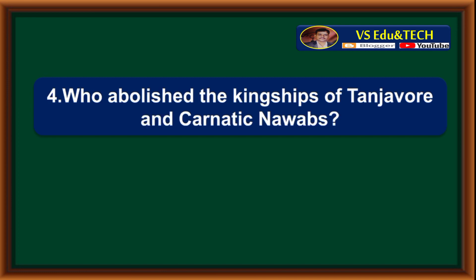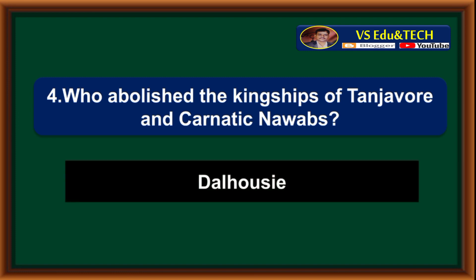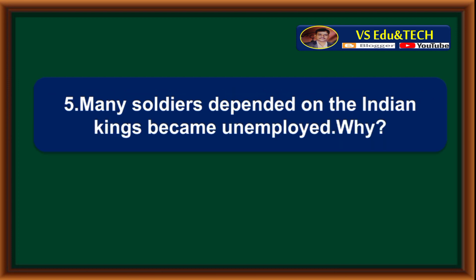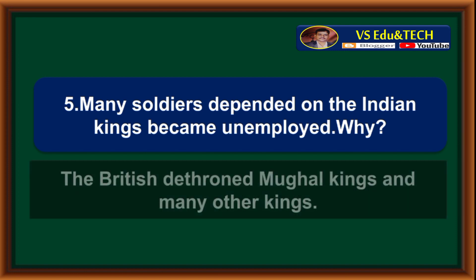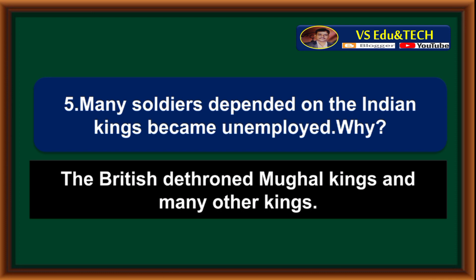Question 11: Who abolished the kingship of Tanjavur and Carnatic Nawab? Answer: Dalhousie abolished the kingship of Tanjavur and Carnatic Nawabs. Question 12: Why did many soldiers who depended on the Indian kings become unemployed? Answer: The British dethroned the Mughal king and many other kings.